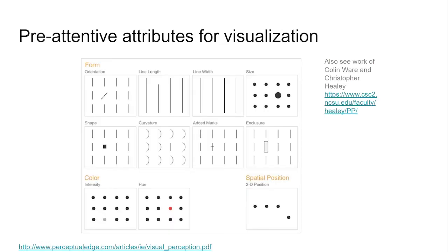Here are the different attributes that have been found to be pre-attentive when used in isolation. We've already talked about color and shape, but there are also other ways to manipulate, including orientation, width, size, among other elements.